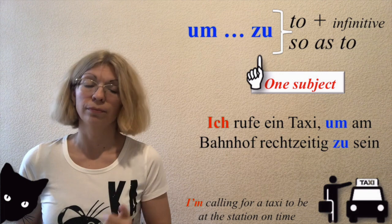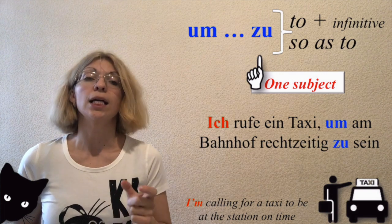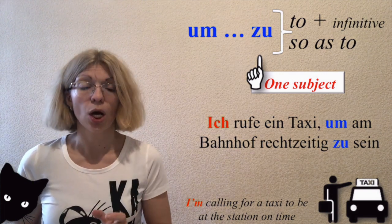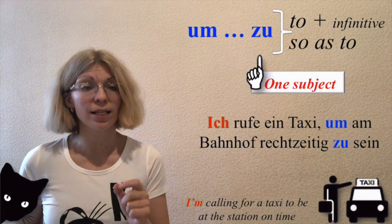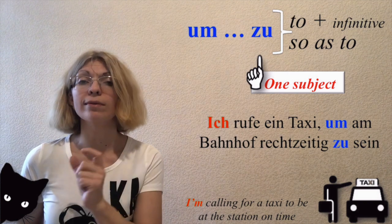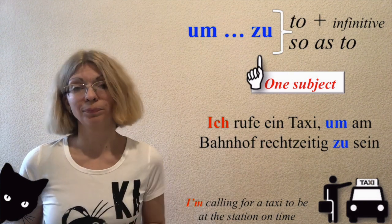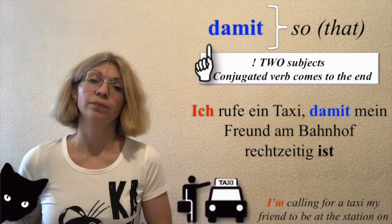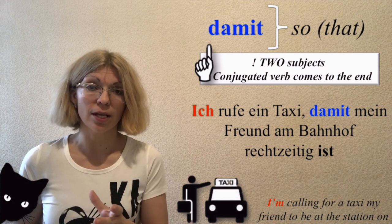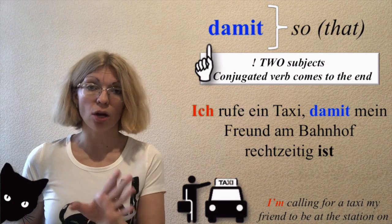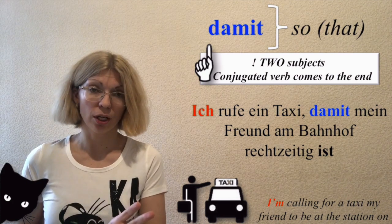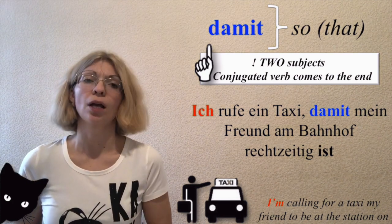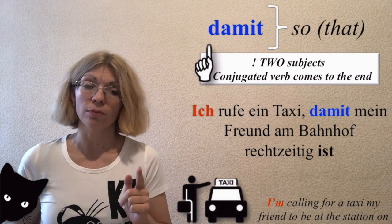Example: 'I'm calling for a taxi to be at the station on time.' In German: 'Ich rufe ein Taxi, um am Bahnhof rechtzeitig zu sein.' Now, 'damit' — the English equivalent is 'so that' or just 'so'. In English we can omit 'that'.